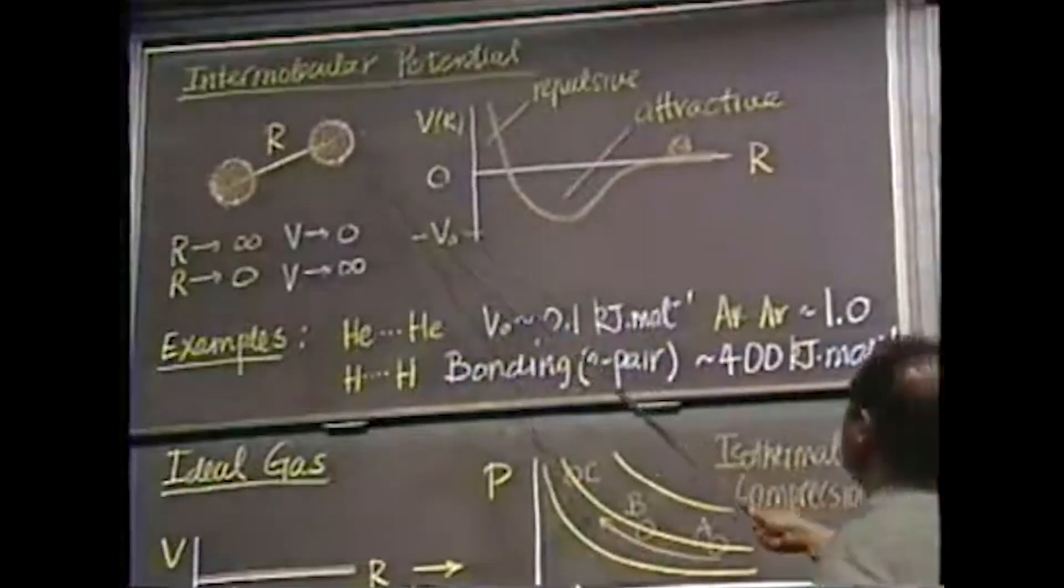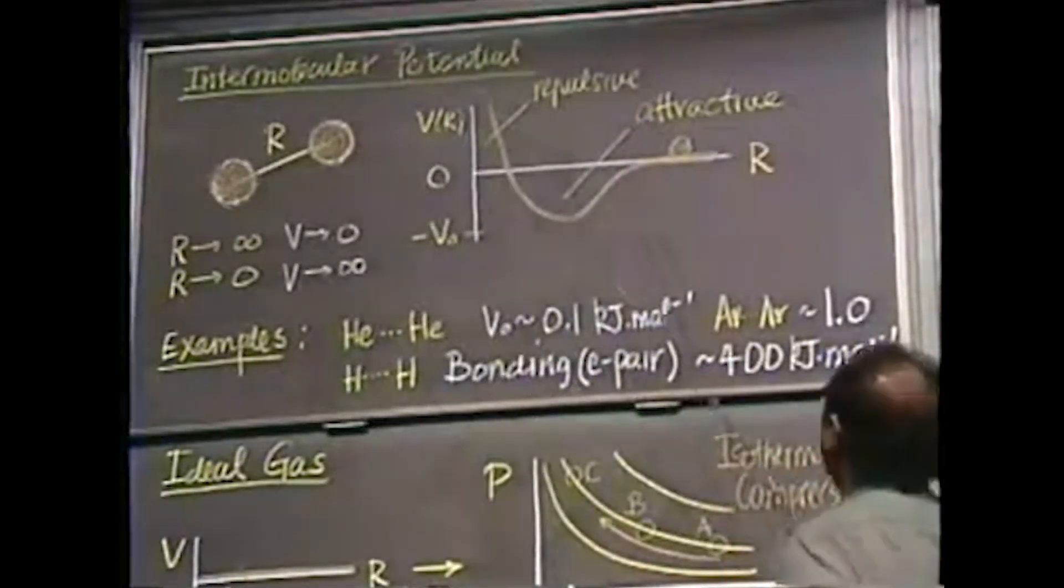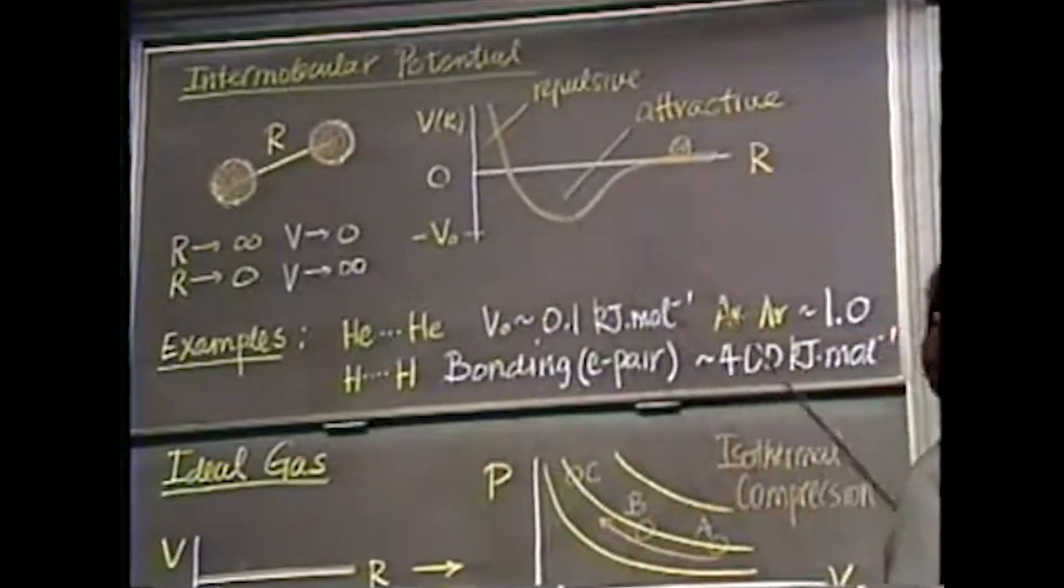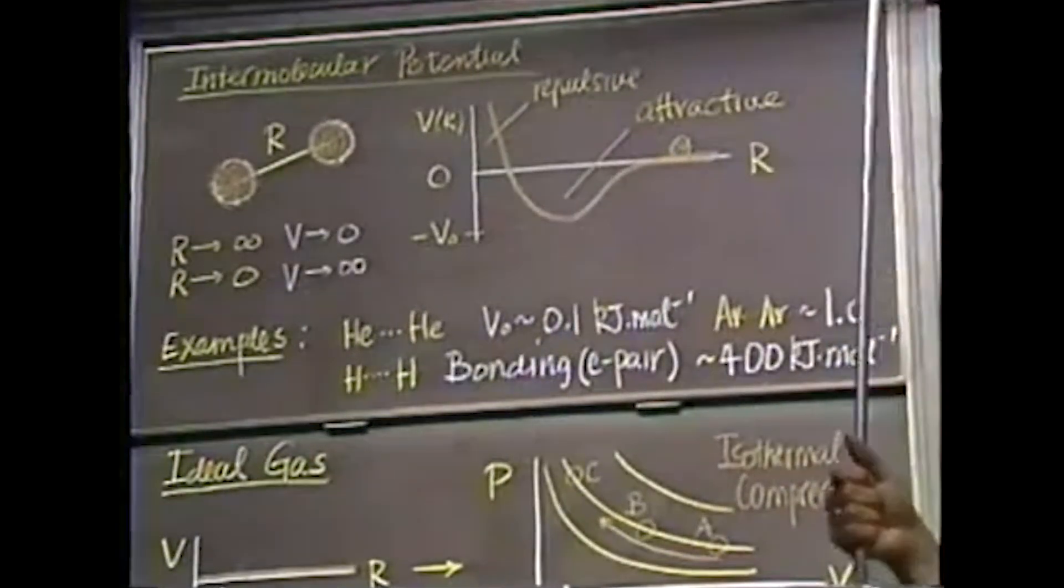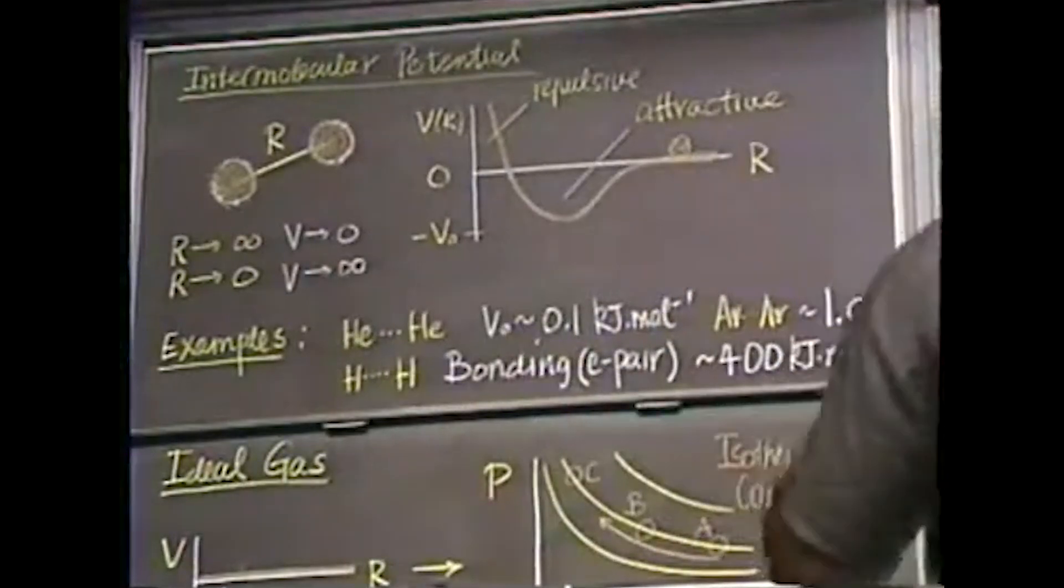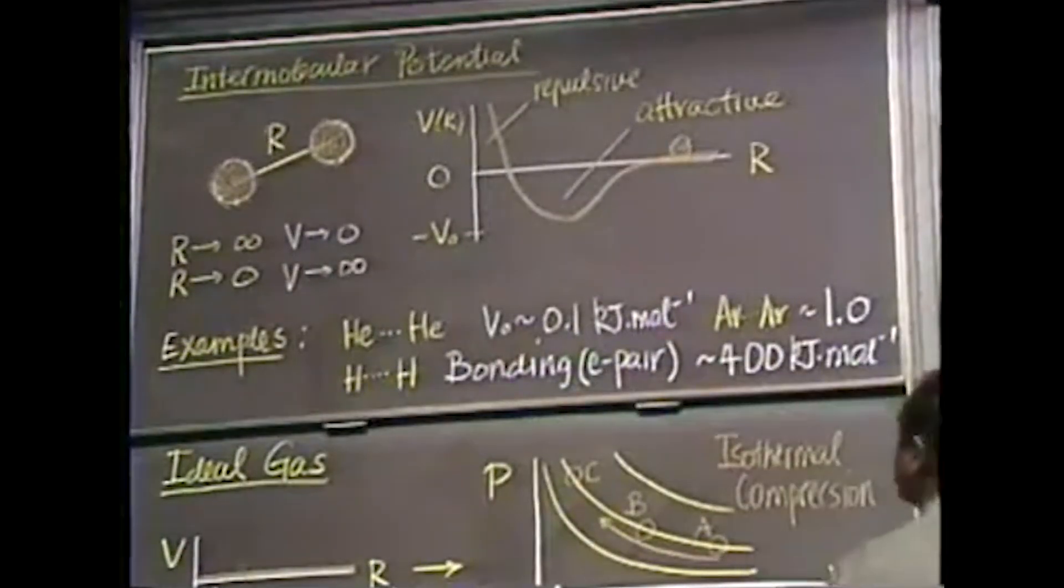What does the intermolecular potential look like? What do you mean molecules or atoms care about each other? Here's roughly what they look like, and we're going to go into this in great detail at the end of the semester when we come back to quantum mechanics and bonding and really do something quantitative with interactions between atoms and molecules.